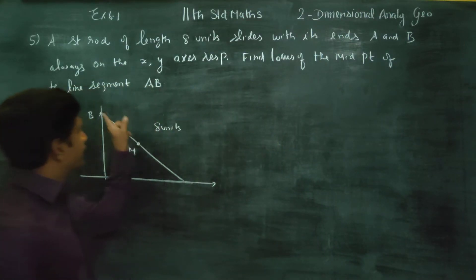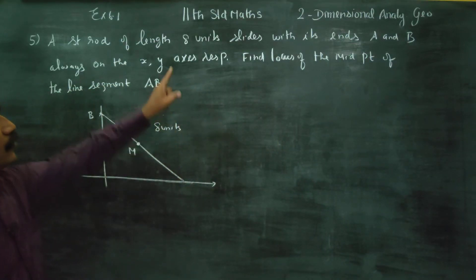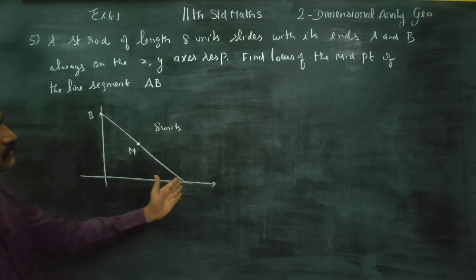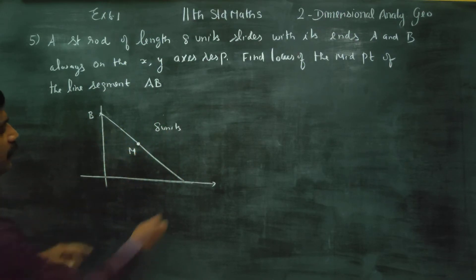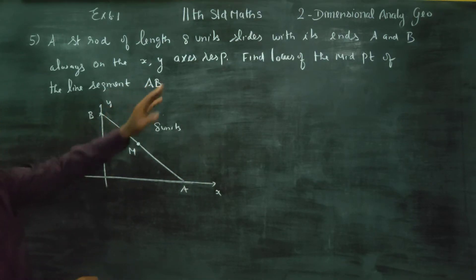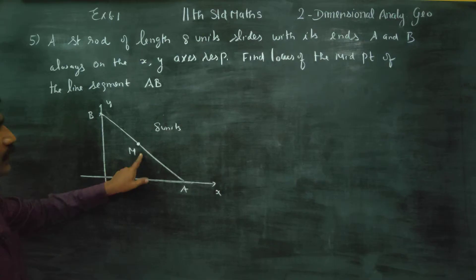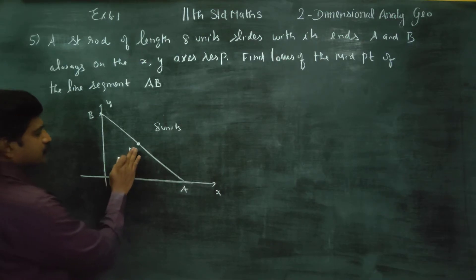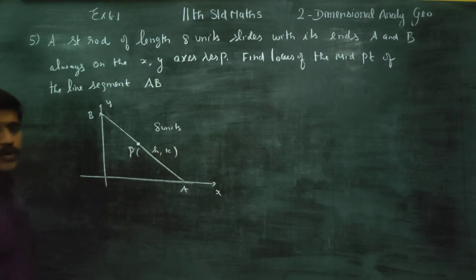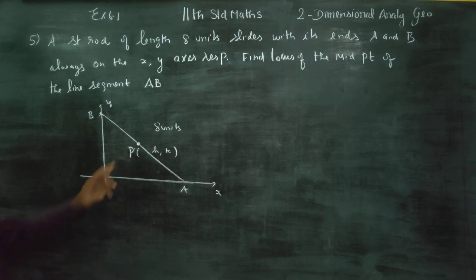A straight rod of 8 units slides with its end A and B on the x-axis and y-axis respectively. Find the locus of the midpoint of the line segment.